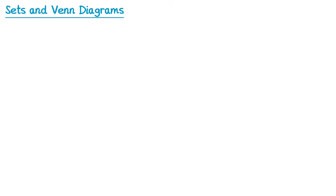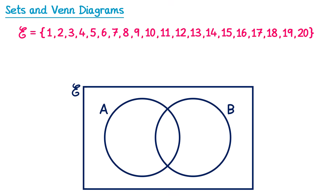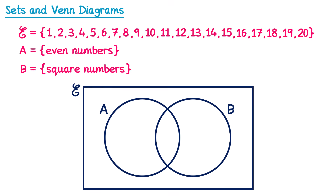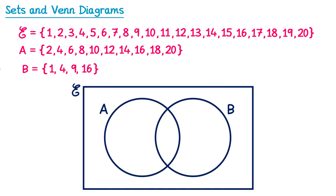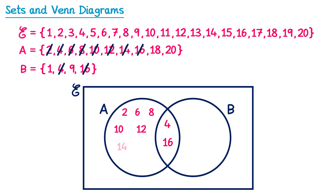Let's look at how these can be used in a question. We have a Venn diagram with the universal set from 1 to 20, set A is even numbers, and set B is square numbers. The even numbers between 1 and 20 are 2, 4, 6, 8, 10, 12, 14, 16, 18, and 20. The square numbers between 1 and 20 are 1, 4, 9, and 16. We look for numbers in both sets: 4 and 16 go in the middle. Numbers just in set A are 2, 6, 8, 10, 12, 14, 18, and 20. The numbers just in set B are 1 and 9.